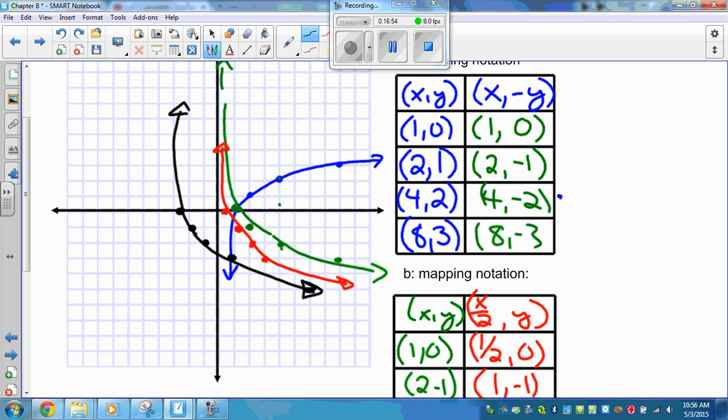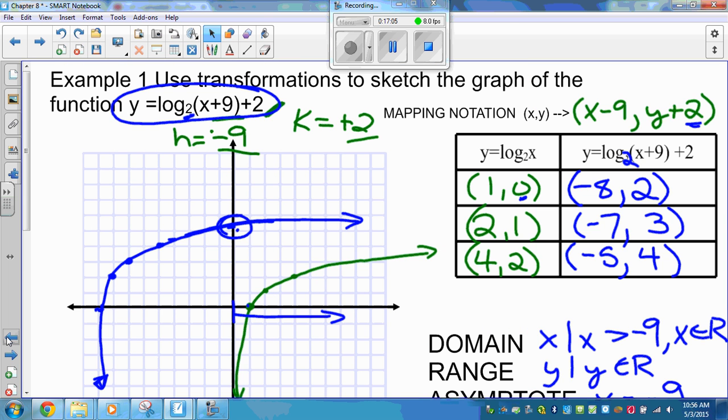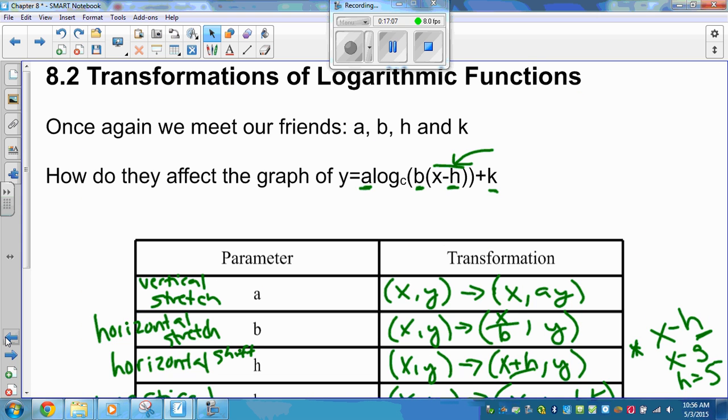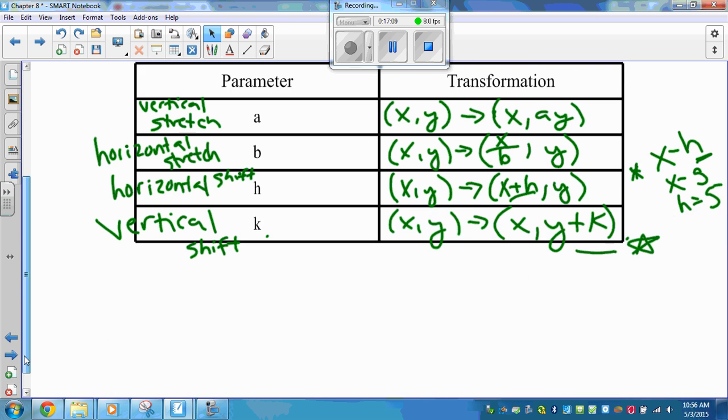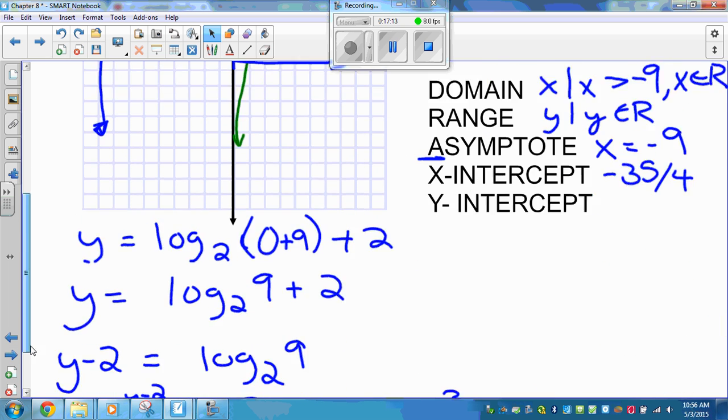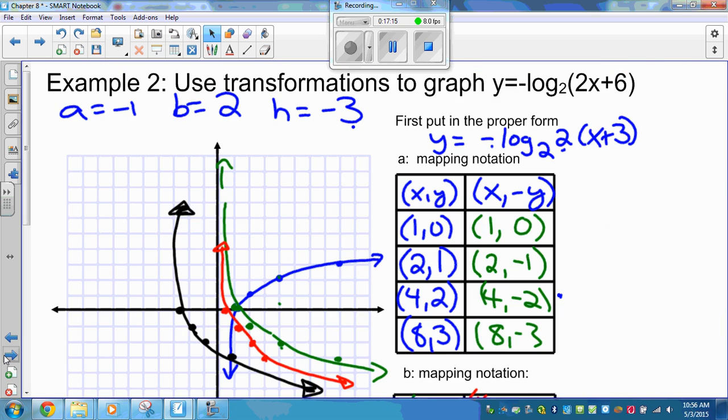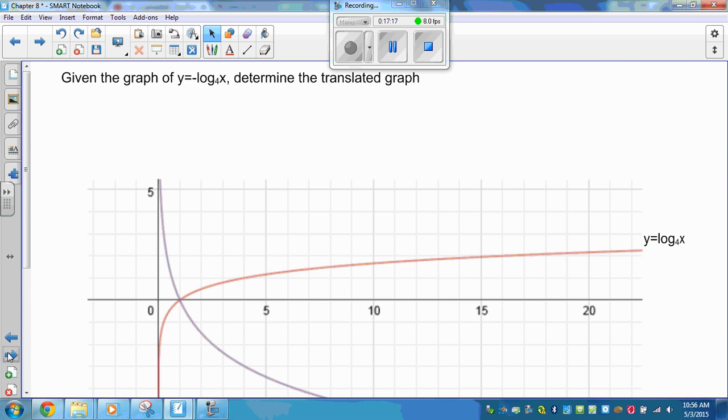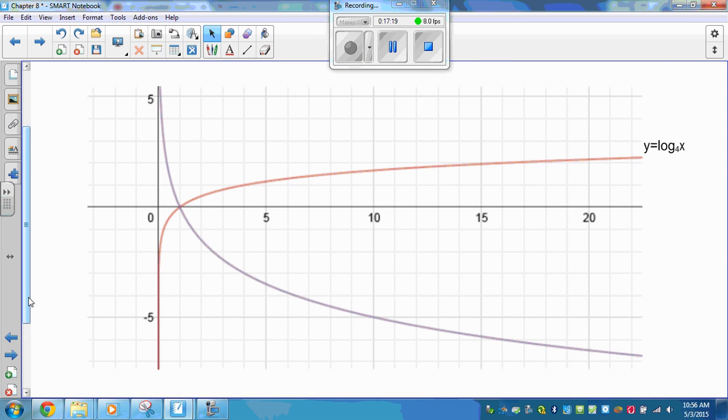So those are all the transformations that have happened. So if you need to find exact points, this is a good way to do it, is doing the translation using this information. This information right here. I was going to do another example, but I think 17 minutes is way too long. So we will do this example in class together.